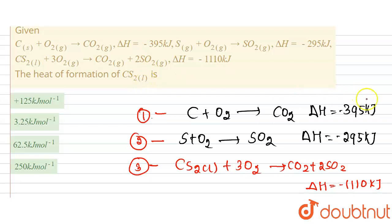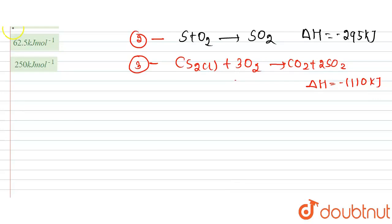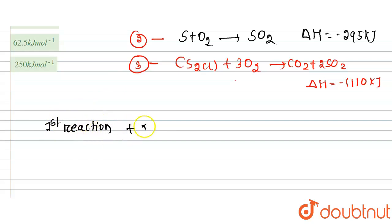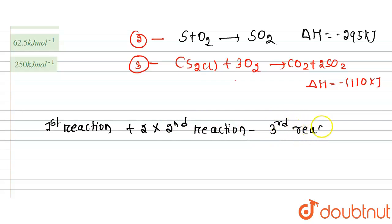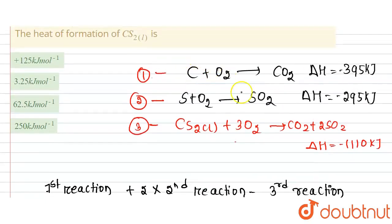We can calculate the heat of formation of CS₂ using Hess's Law: ΔH of reaction one plus 2 times ΔH of reaction two, minus ΔH of reaction three. This works because the carbons cancel to CO₂ and the CO₂ terms cancel, leaving CS₂.